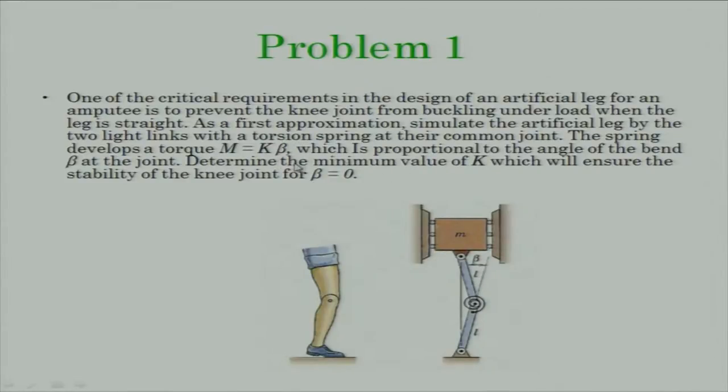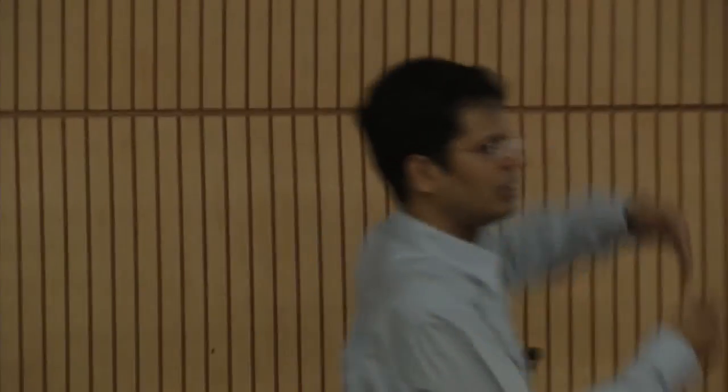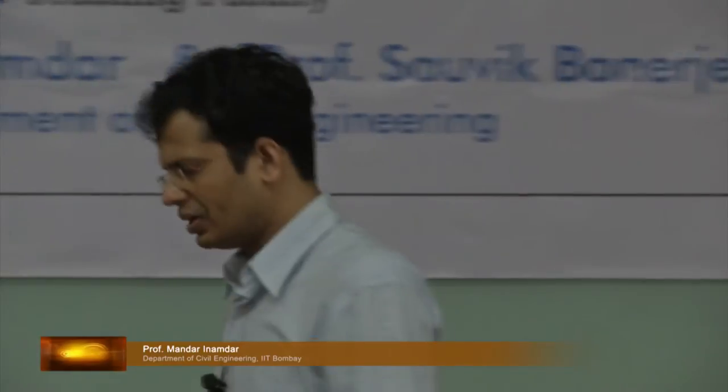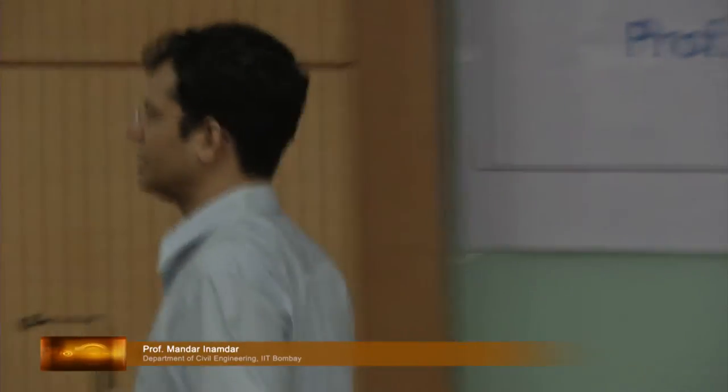What we are asked to find is the minimum value of k that will ensure the stability of the knee joint at beta equal to 0 — meaning when it is exactly straight, a tiny perturbation should come back. What should be the minimum value of k for that? This will take less than 5 minutes to solve.